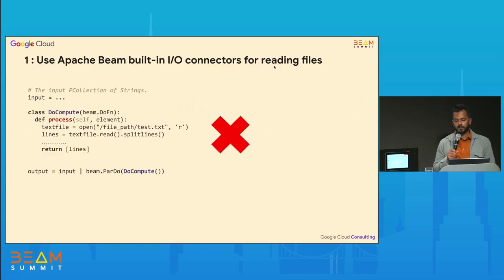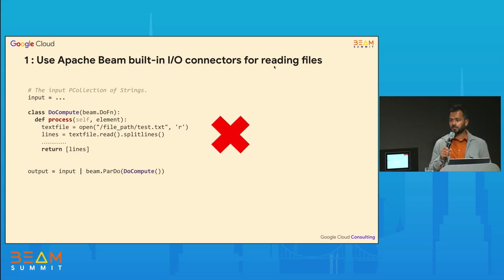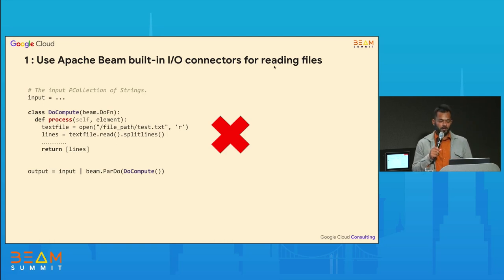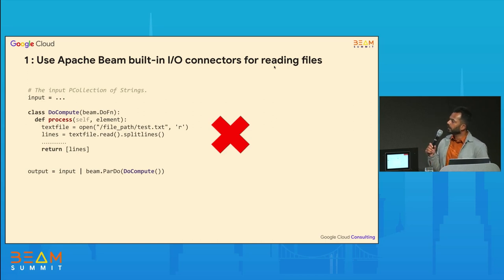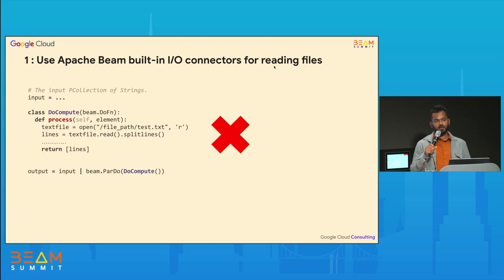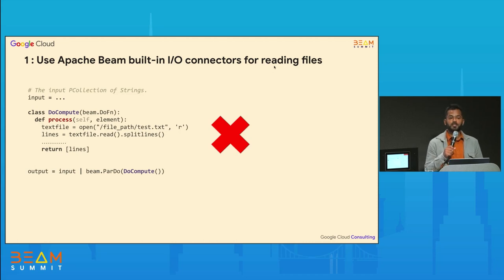The first best practice: if you're trying to read a file, always use the Beam built-in I/O. A common anti-pattern I see with new Beam developers is reading a file within a DoFn to do some lookup or analysis. The problem is that because there will be hundreds of DoFns, you are essentially creating hundreds of copies of that same file, and if that file is large, you can easily blow up the memory capacity.